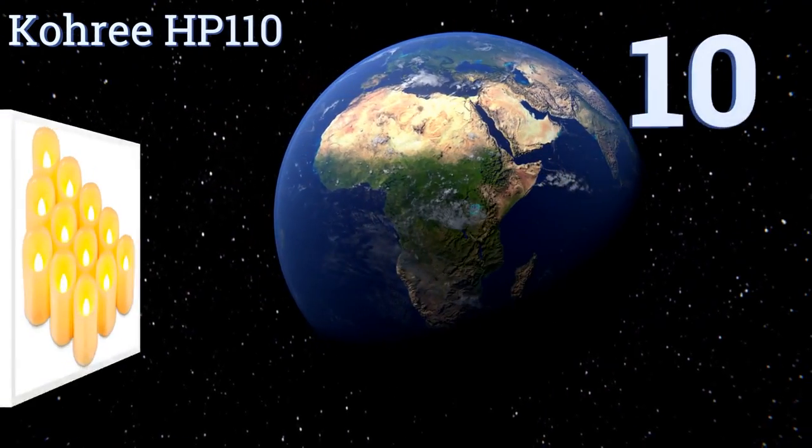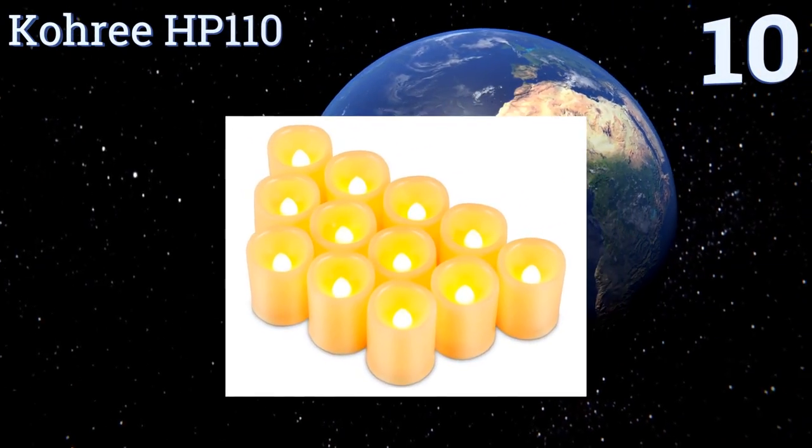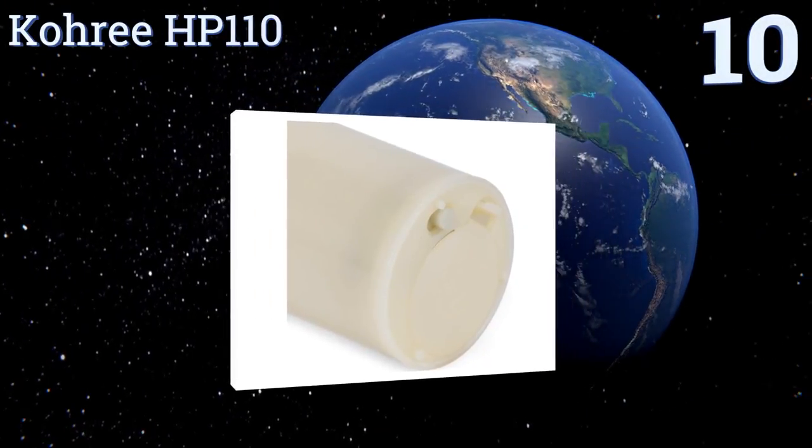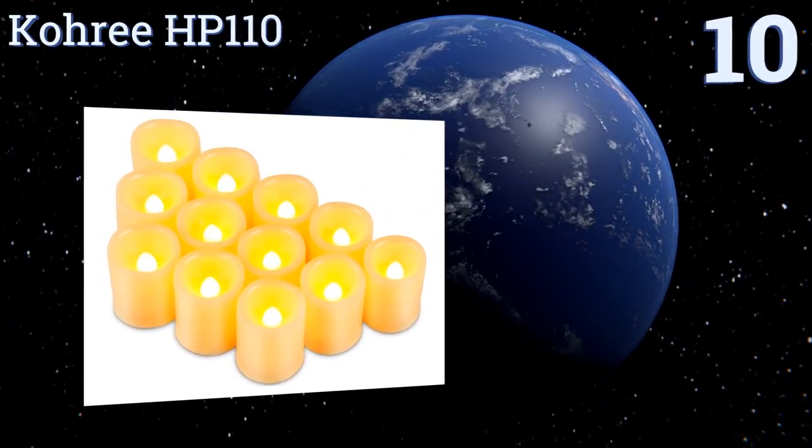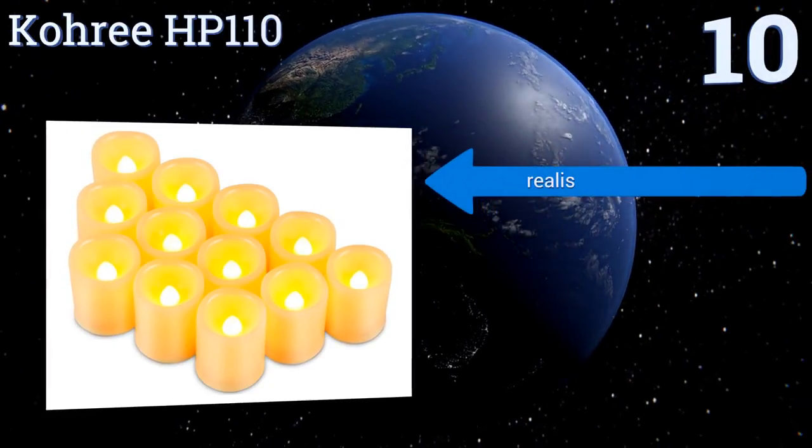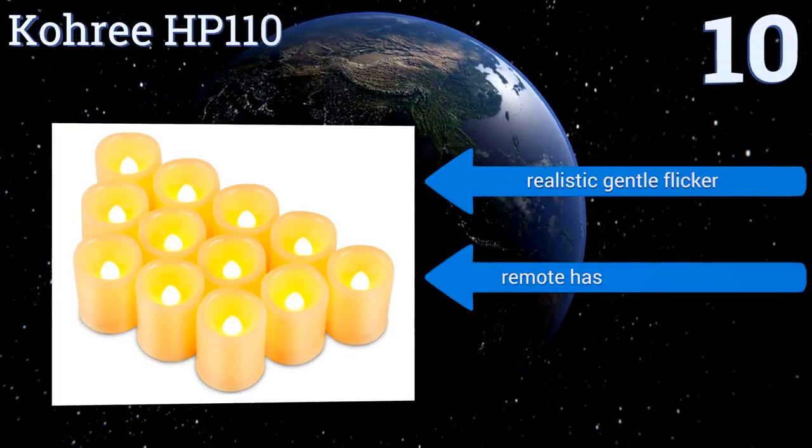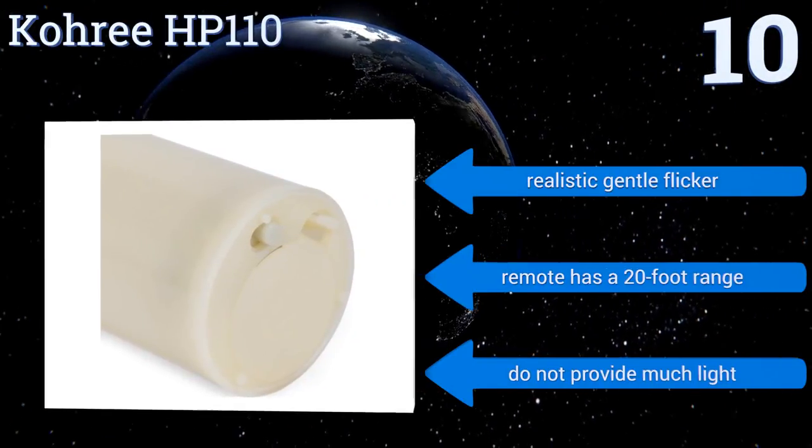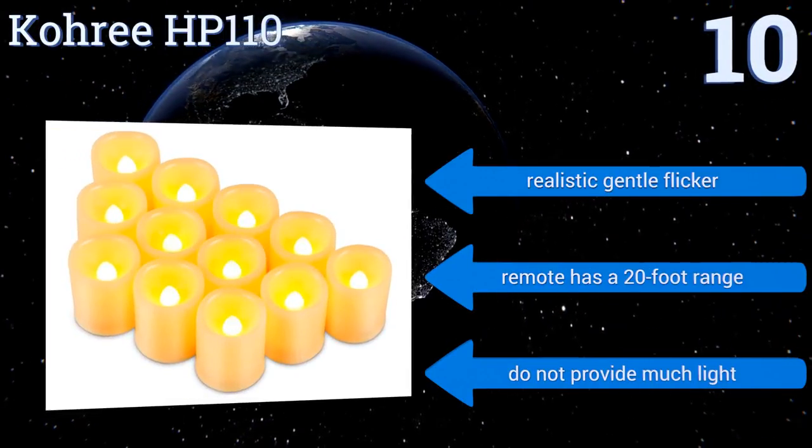Starting off our list at number 10, the Kohree HP110 have an intimate amber color that makes them perfect for decorating a surprise nighttime proposal or romantic dinner. Available in a six or twelve pack, you can easily line them up to create various shapes like a heart or a circle. They have a realistic gentle flicker and the remote has a 20 foot range.